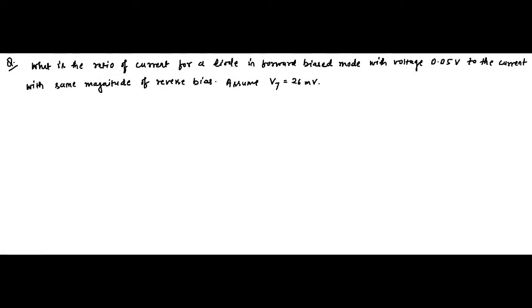What the question says is that in the first case we have a forward applied voltage of plus 0.05 volt and we have to determine the forward current. In the second case we have a reverse voltage of the same magnitude but opposite sign, minus 0.05 volt, and we have to find out the reverse current, and then the ratio of forward to reverse current.